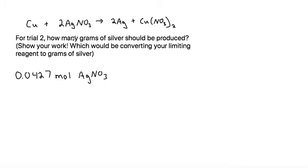The student found that there were 0.0427 moles of silver nitrate. We know that this was the limiting reagent because that's what we found in a step before.